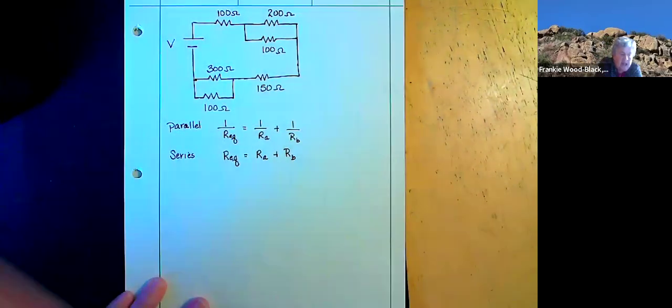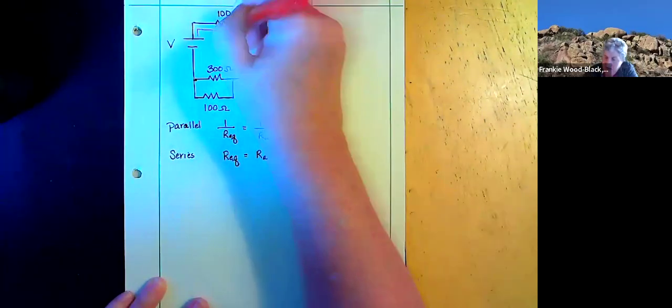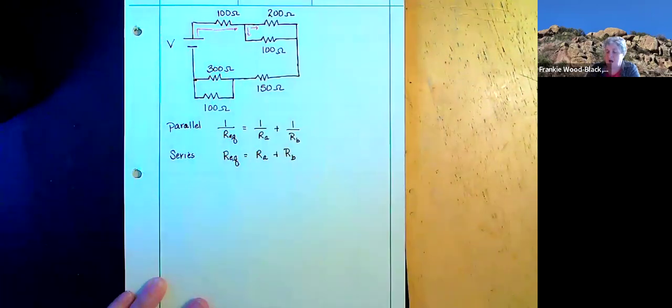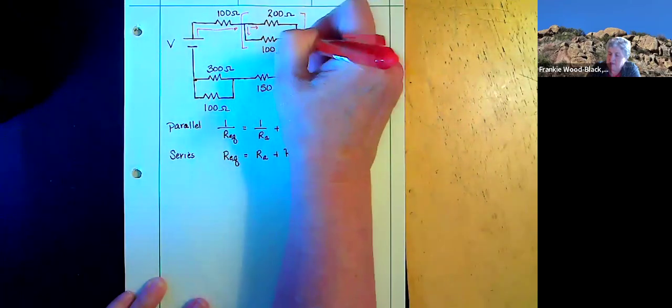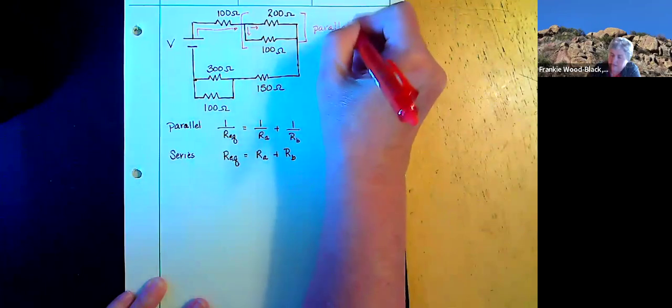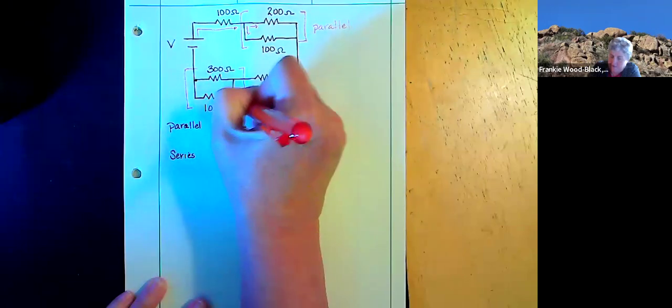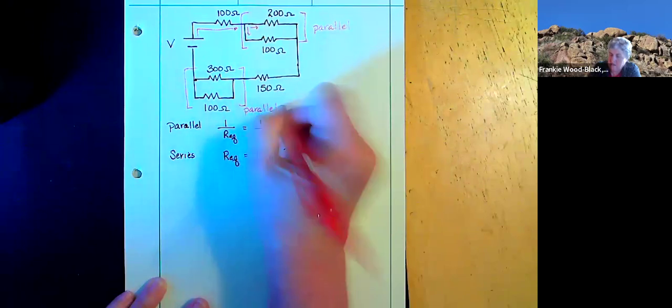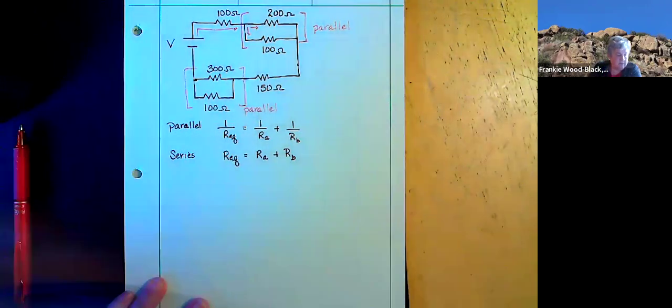So let's go ahead and move through this. If I have current that's flowing through, it's going to go through here, and then it can split off. So this part here is going to be in parallel. So let's calculate those two parallel ones first.